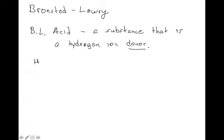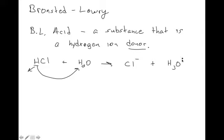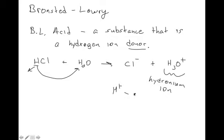Going back to the HCl example: it's an Arrhenius acid because it dissociates that hydrogen off. In Bronsted-Lowry theory, when HCl is put into water, the H gets donated to the water, and what we end up with is Cl⁻ plus H3O⁺. This ion is called the hydronium ion. In acid-base solutions, you don't have free H⁺ floating around — they attach to a water molecule to form H3O⁺. So HCl is both an Arrhenius acid and a Bronsted-Lowry acid.